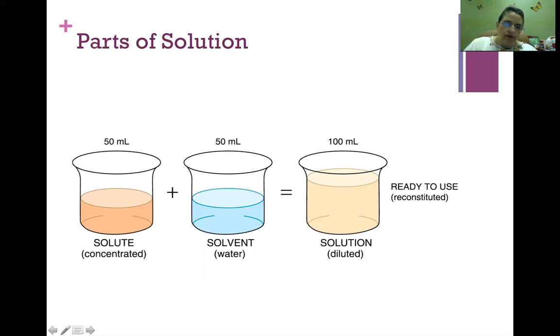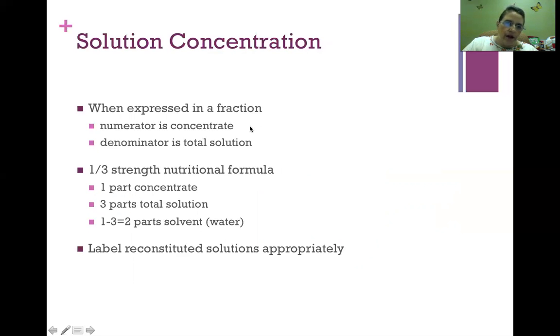I want to go over parts of the solution. We have solute, solvent, and solution. The solute is the actual concentrate that you're going to mix. Usually water is the solvent, but it can be other things too. The solution is the entire combination of the two. When these are usually expressed in a fraction, the numerator is the concentrate, the denominator is the total solution. So when we have a one-third strength nutritional formula, this indicates that one part is the concentrate, three parts total solution, and then you do a little bit of math to figure out what the solvent is. You would take three minus one, and you would get two parts—that's your amount of solvent. Make sure, if you have to reconstitute this, that you label any kind of solutions appropriately.